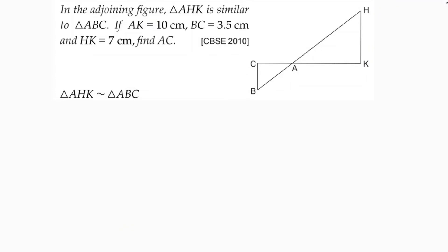In the adjoining figure, triangle AHK is similar to triangle ABC. It is given that AK is 10 cm, BC is 3.5 cm, and HK is 7 cm. We need to find the length of AC. Here triangles are similar.